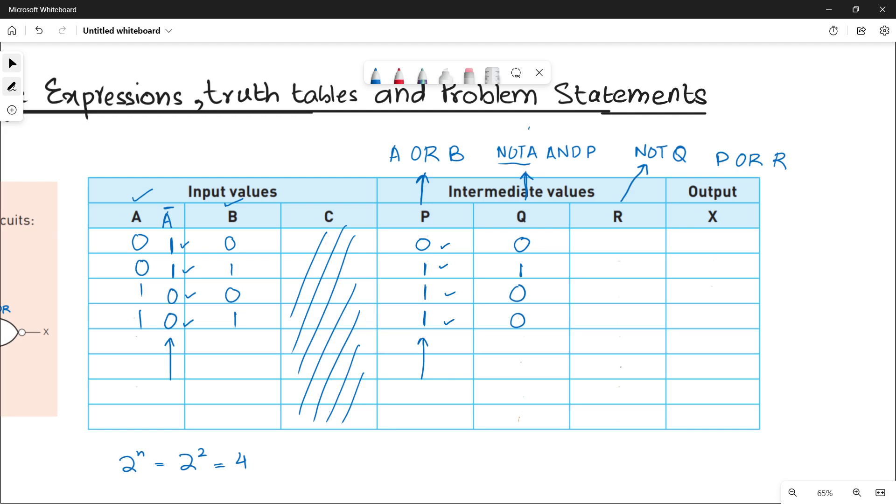First, you have to do for NOT A. Once you get the result of NOT A, then you will AND it with P. This is how we have performed it.